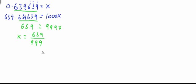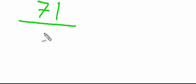In your exam, if you don't have a calculator, leaving the fraction as 639 over 999 is completely sufficient. If you do have a calculator that can simplify fractions, use it — because this can be simplified. 999 divides by 9, and 639 also divides by 9. You can tell because 6 plus 3 plus 9 equals 18, which is a multiple of 9. 639 divided by 9 equals 71, and 999 divided by 9 equals 111. So the simplest form is 71 over 111, and that is the question done.